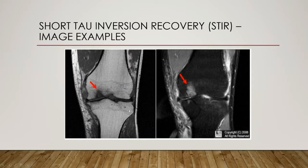In this example, it is a T1 MRI of osteochondritis dissecans. The T1-weighted image is on the left side, and it is the same area with STIR imaging on the right. With fat suppressed, we can clearly see the bone edema as a brighter white area.